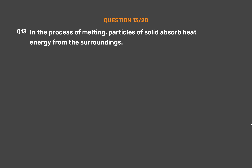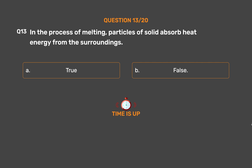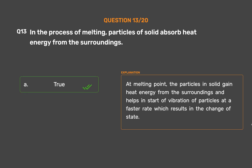Question number 13: In the process of melting, particles of solid absorb heat energy from the surroundings. Option A: True. Option B: False. The correct answer is Option A, True. At melting point, the particles in solid gain heat energy from the surroundings and this helps in the start of vibration of particles at a faster rate, which results in the change of state.